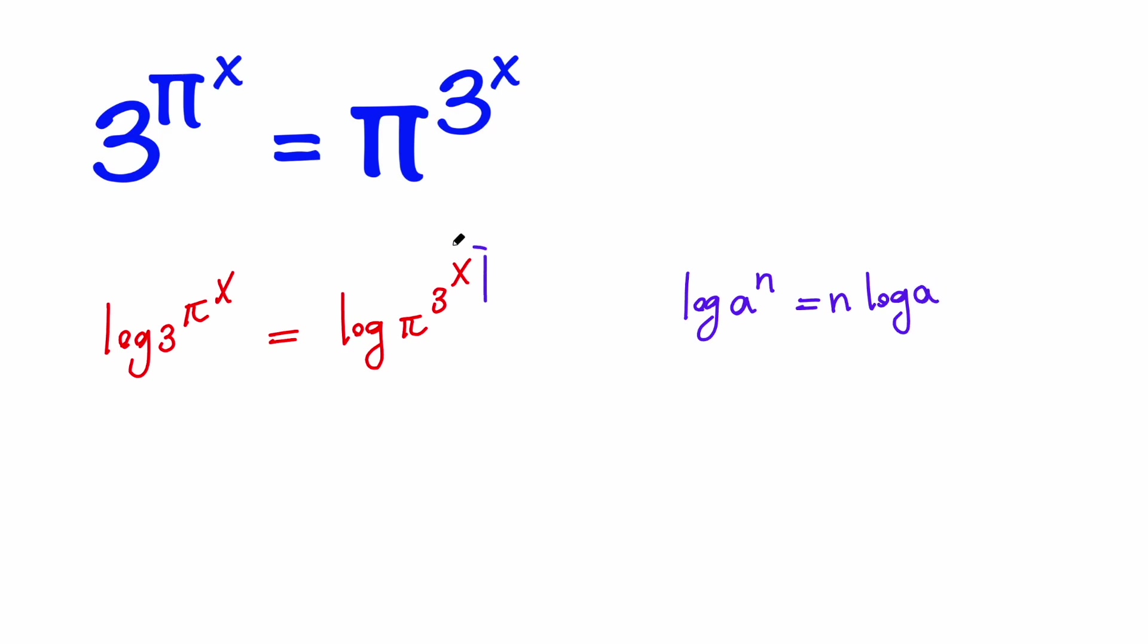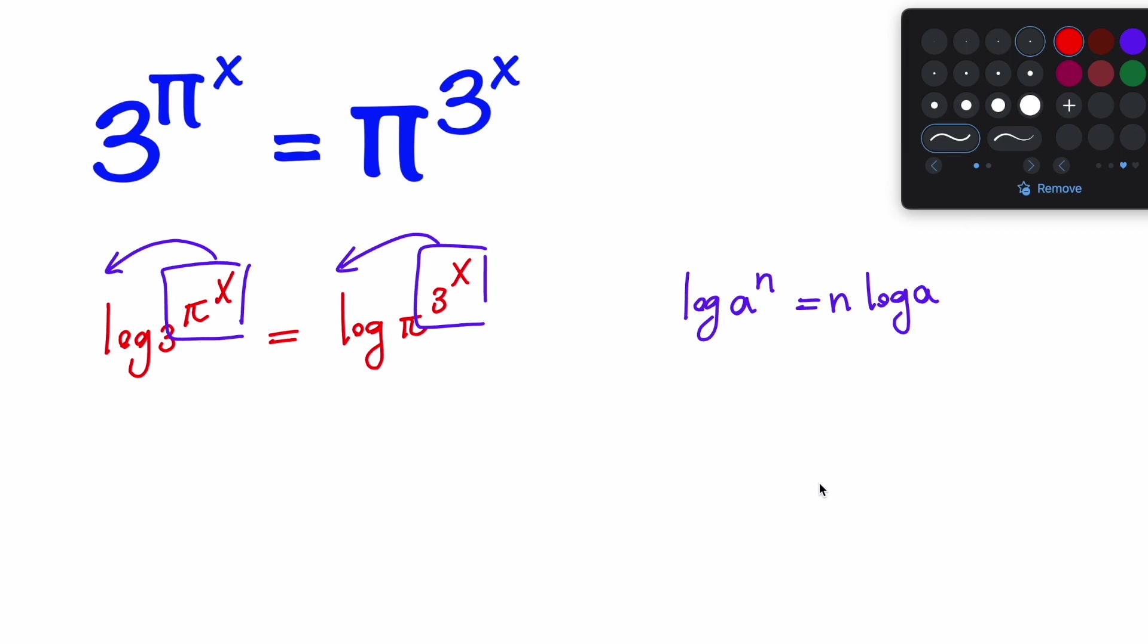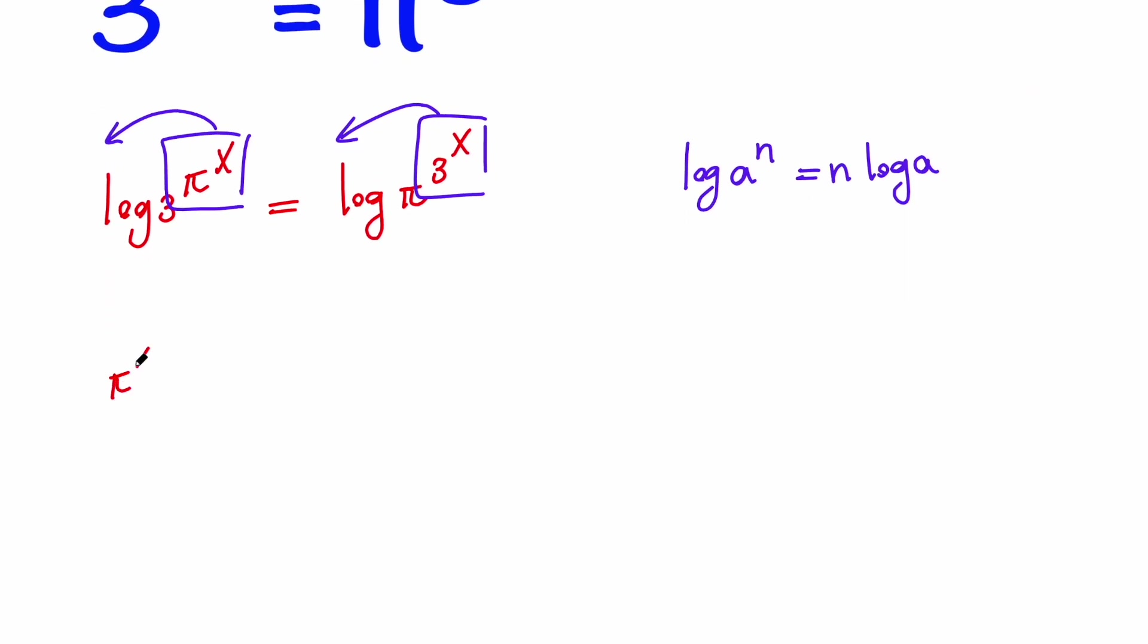So we can take the powers and bring them in front. So if you do that, we're going to have pi to the x times log 3 equals 3 to the x times log pi.